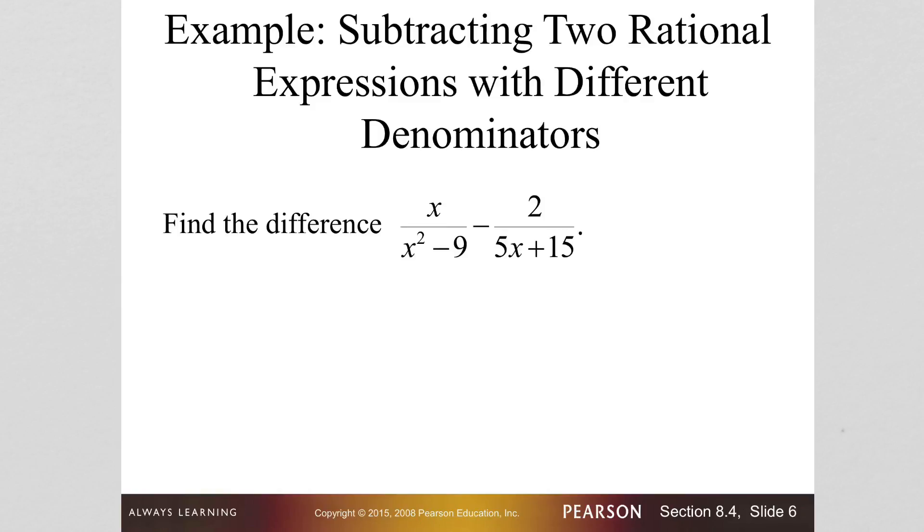So let's take a look at this problem. First thing you want to do is you want to factor your denominators because they are not the same. So we are going to have to see what factors we are missing. So the numerator on the left is going to remain x. The denominator becomes x minus 3, x plus 3, minus 2. Notice I haven't done anything to the numerators yet. And the denominator on the right becomes 5 times x plus 3.